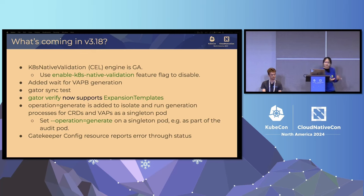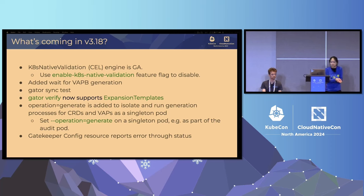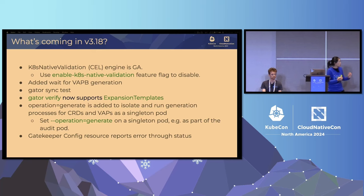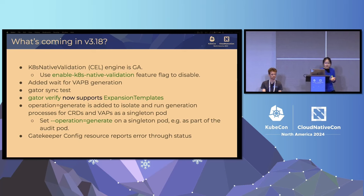We also recently added operation equal to generate, which allows us to isolate and ensure that all the processes Gatekeeper has for generating CRDs and VAPs are all coming from a single pod — to ensure all resources we generate come from one source of truth. We also added some status error reporting to the config resource, if you happen to use a Gatekeeper config resource.